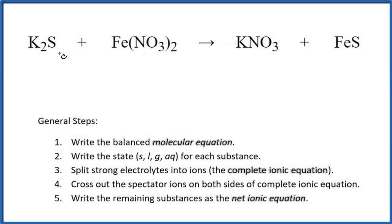In this video we'll balance the net ionic equation for K2S plus Fe(NO3)2. This is potassium sulfide plus iron two nitrate. So to do this we first need to balance the molecular equation.